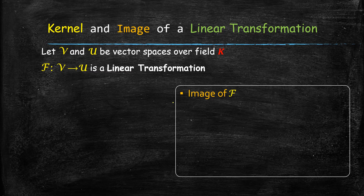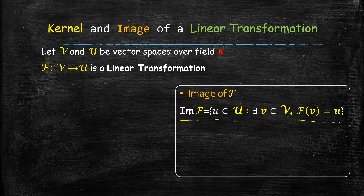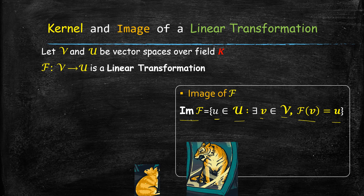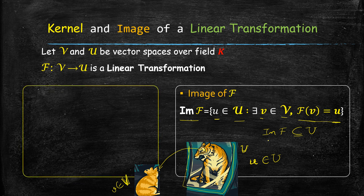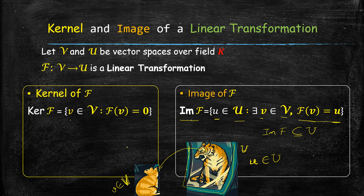Next, the definitions of kernel and image of a linear transformation. The image of F is defined as those elements u of U such that F(v) = u for some v in vector space V. Recalling our cat example: the cat is vector space V, the mirror is vector space U, and the image of F is the tiger — the transformation of the cat. The kernel of F is defined as those elements v of vector space V such that F(v) = 0 (the zero vector). The kernel of F is a subset of vector space V.